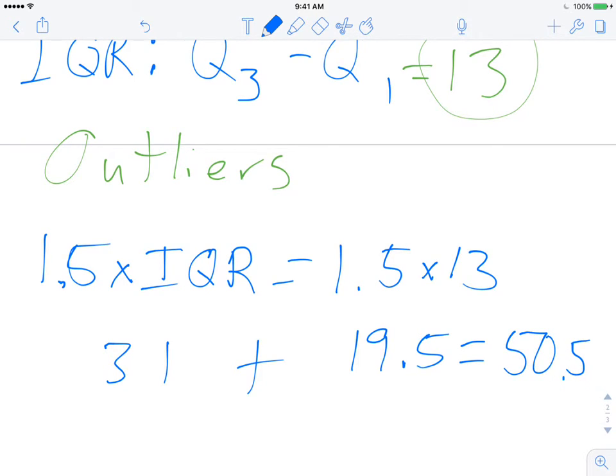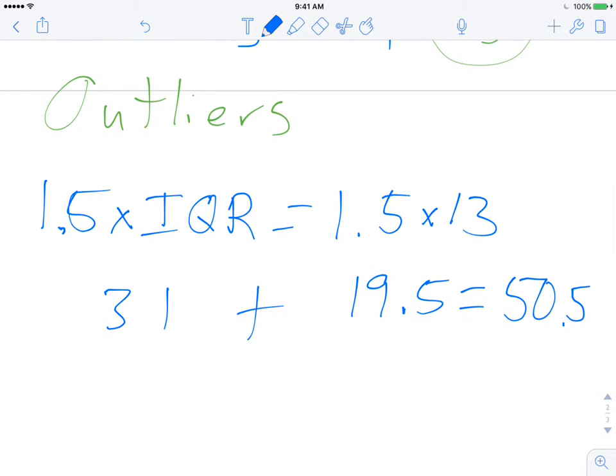And then I subtract 19.5, which is almost 20. So 31 minus 20 would be 11. So 31 minus 19.5 would be just a little bit more than 11. 11.5.